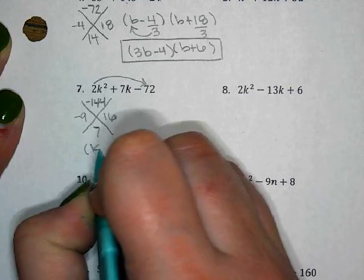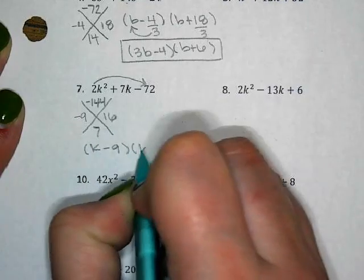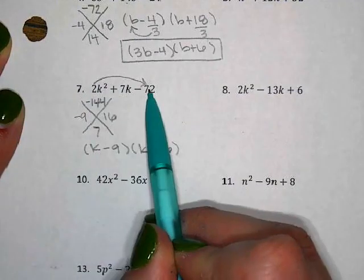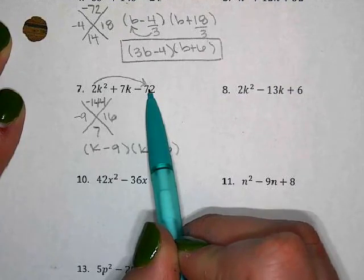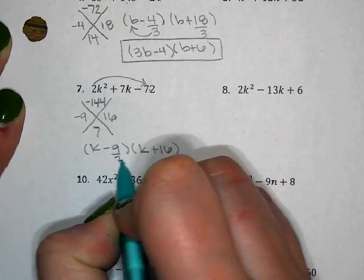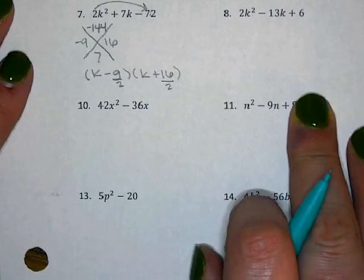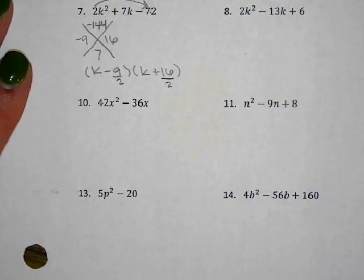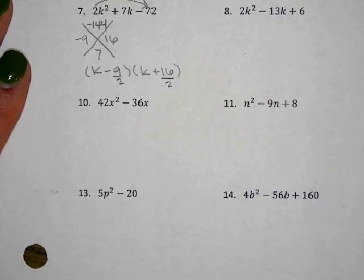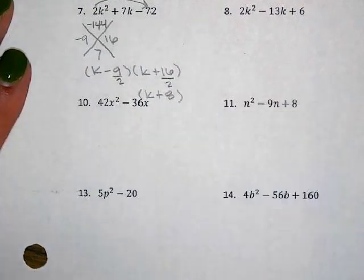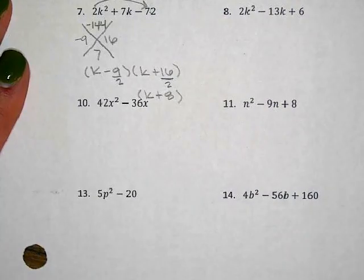We slid the 2, so now divide by 2. Can we simplify either fraction? The right one: 16 over 2 is 8, giving k plus 8. The left fraction doesn't simplify, so we bottoms up: 2k minus 9. Final answer: (2k minus 9)(k + 8).